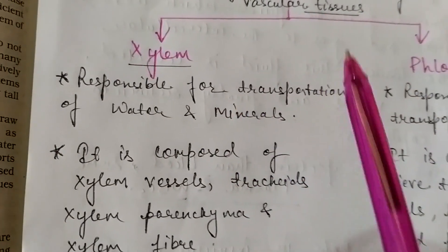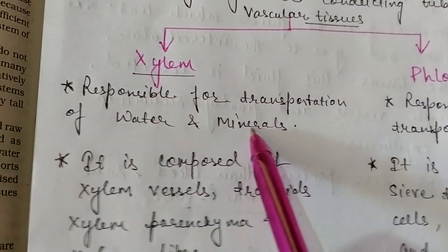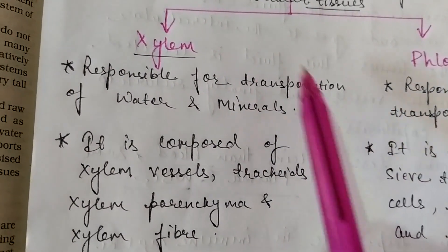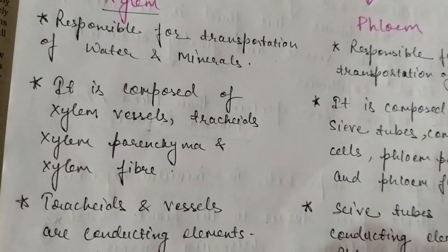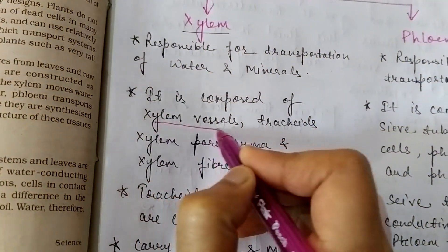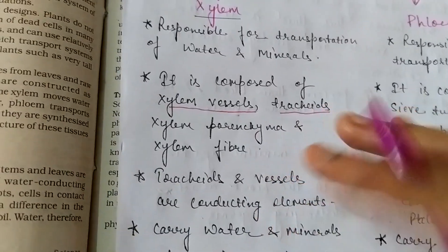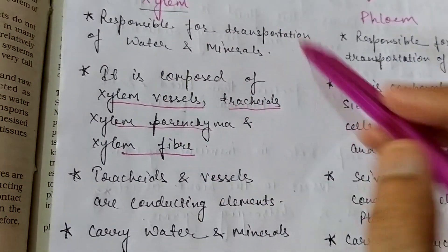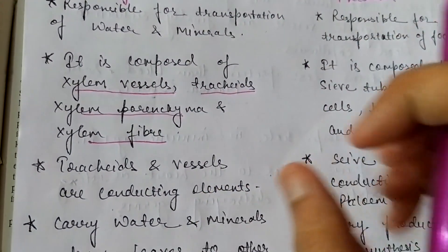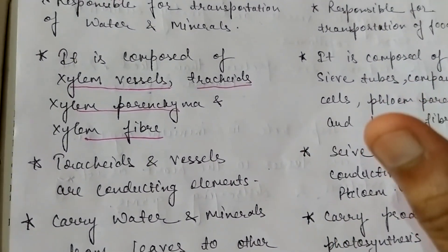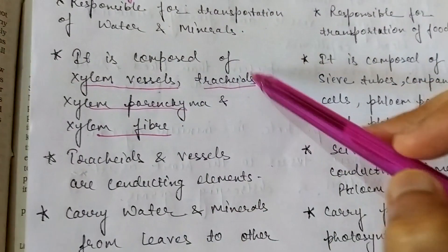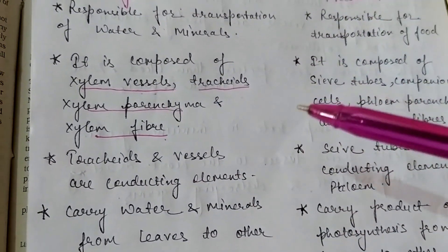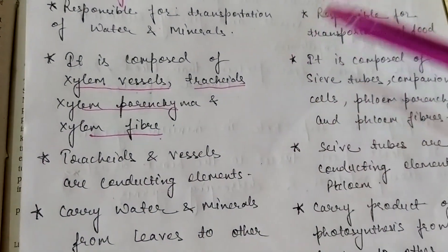Now let's talk about vascular tissue. There are two vascular tissues — xylem and phloem — which help in conducting water and minerals from roots to various parts of the plant. First, we will discuss xylem. Xylem is responsible for transporting water and minerals. Xylem is composed of xylem vessels, tracheids, xylem parenchyma, and xylem fibers. Just as our body has various organs that together form a body, xylem has these four components and is connected like a tube through which transportation of water and minerals takes place.